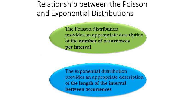What's the point of these two distributions — Poisson and exponential? Poisson is the number of occurrences per interval. Exponential is the length of interval between occurrences. This distinction is something I'm likely to ask on part A of the quiz.